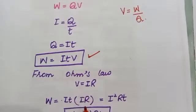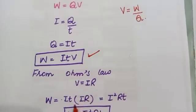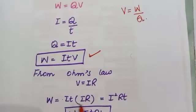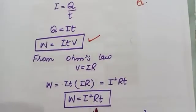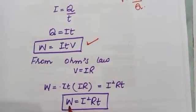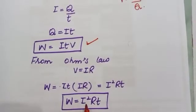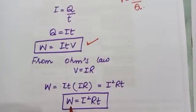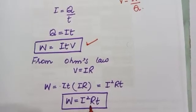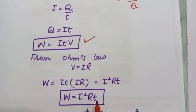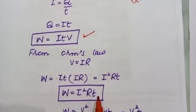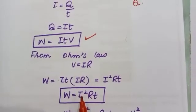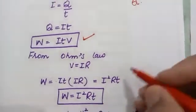Substituting V = IR into W = VIt gives W = IR × I × t = I²Rt. So another form of Joule's Law is W = I²Rt, where I is current, R is resistance, and t is time duration.